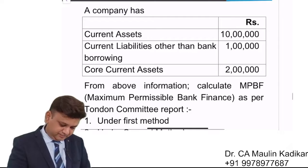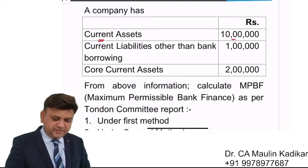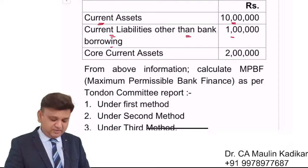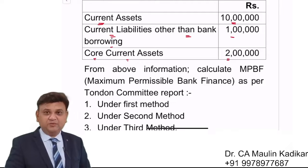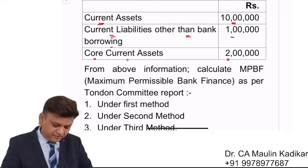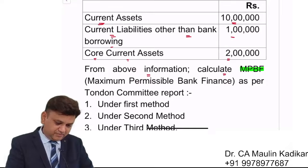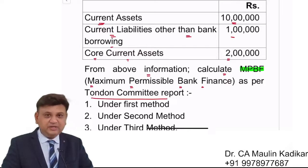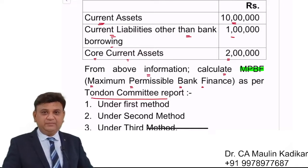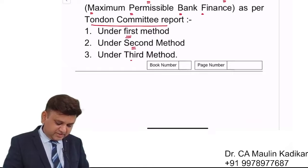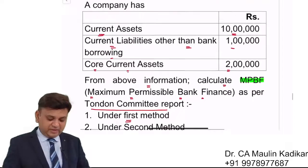A company has current assets of rupees 10 lakhs, current liabilities other than bank borrowing of rupees 1 lakh, and core current assets of rupees 2 lakhs. From this information, we need to calculate MPBF — Maximum Permissible Bank Finance — as per the Tandon Committee report, under all three methods: first method, second method, and third method.